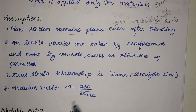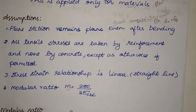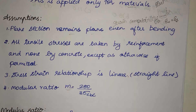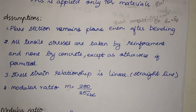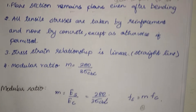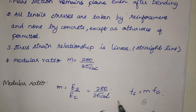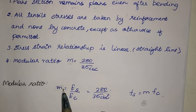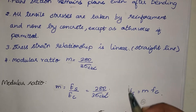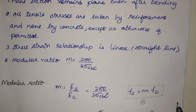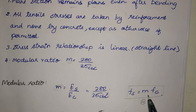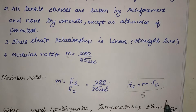In Working Stress Method the stress profile is linear. The modular ratio is equal to 280 divided by 3σcbc. Working Stress Method is not widely used nowadays — it is used only for miscellaneous and tedious calculations like for chimneys, water tanks, and silos. It was used in bridge construction but the recent code has revised to Limit State Method only. Modular ratio is the ratio of modulus of elasticity of steel to that of concrete, and using it we can find stress: stress at steel equals modular ratio times stress at concrete.